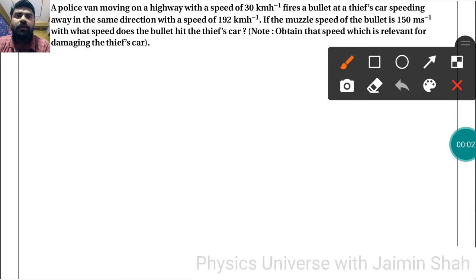Now our question is: a police van moving on a highway with a speed VP equal to 30 kilometers per hour, that is 8.33 meters per second.